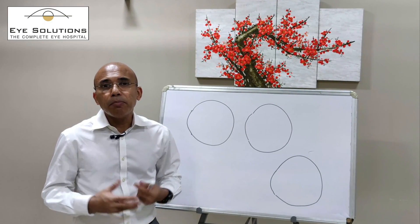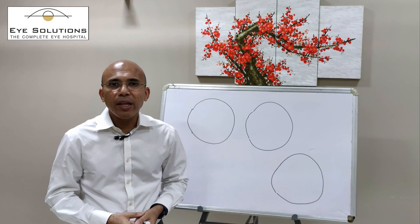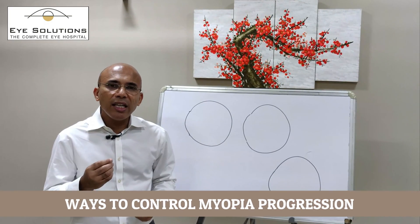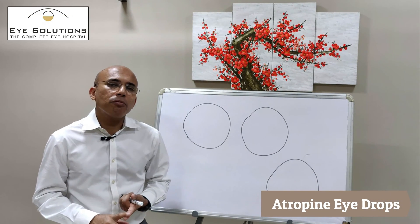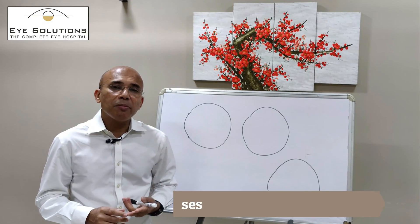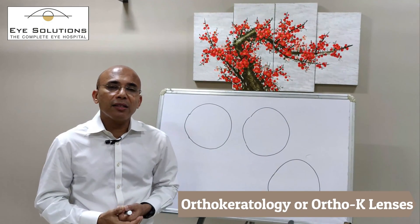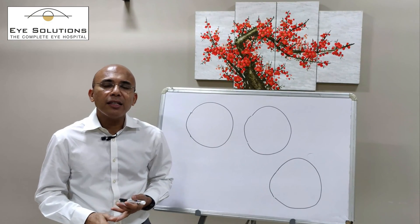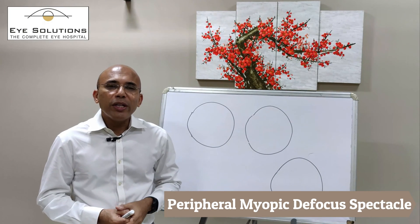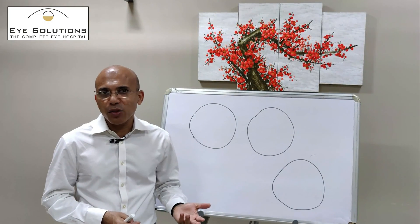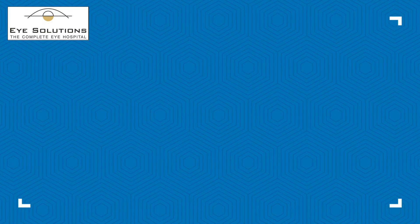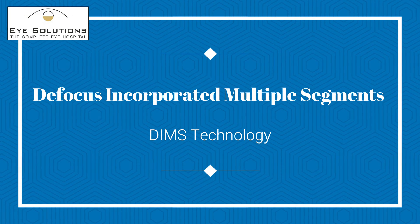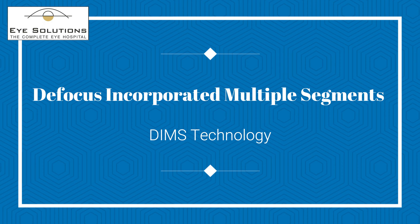Myopia control has become a very important topic in the eye care world. There are three main ways to control myopia today: the first is by using atropine eye drops, the second is by using a particular type of contact lens called an ortho-K lens, and the third is by using specialized lenses that cause a defocus in some areas of your vision, based on what is known as DIMS technology — Defocus Incorporated Multiple Segments.